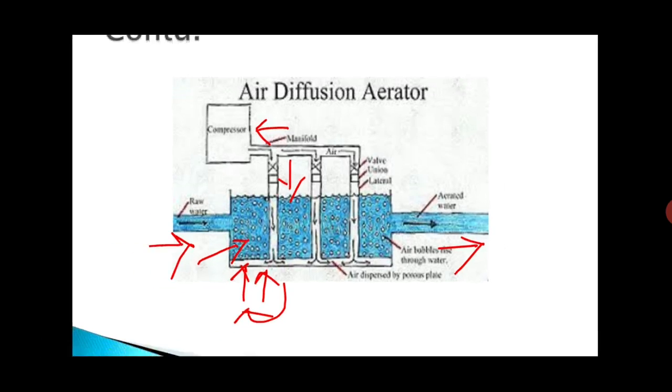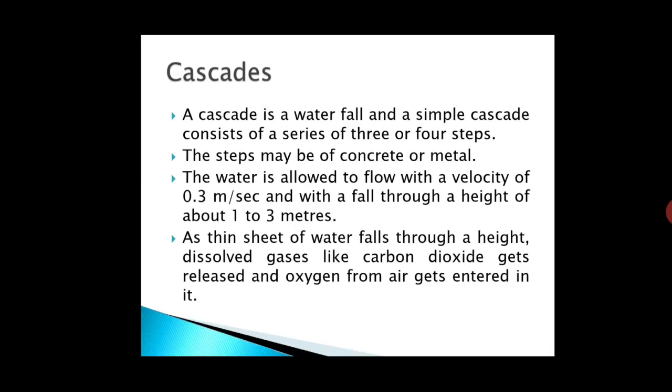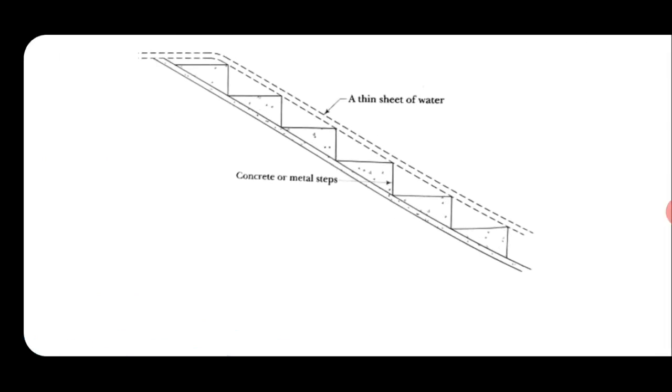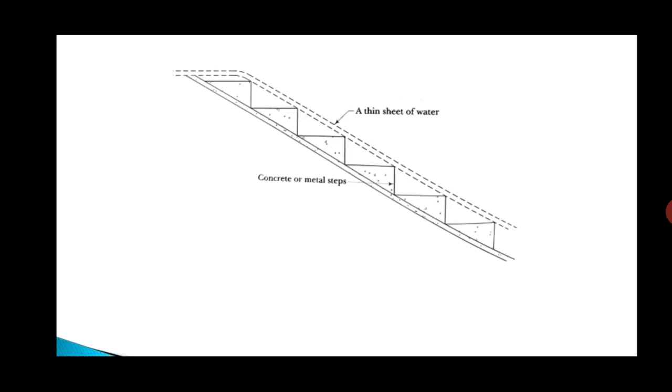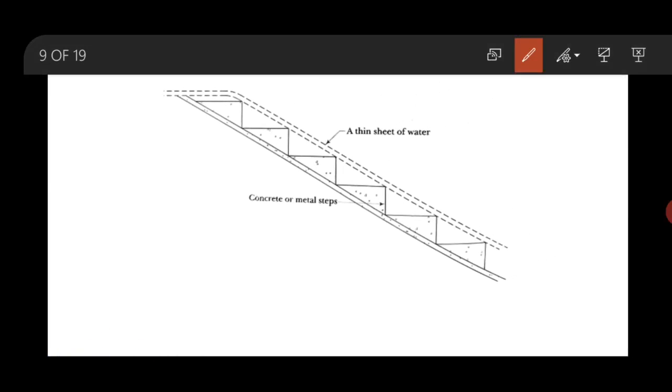The next method is cascades. Cascade is a waterfall, and a simple cascade consists of a series of 3 or 4 steps. These steps are generally made up of concrete or metal. The water is allowed to flow at a velocity of 0.3 meter per second, with a fall through a height of about 1 to 3 meter.